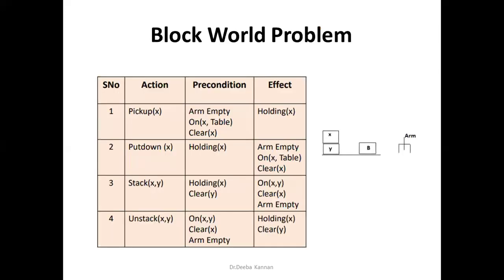We will sum up the block world problem with an example. In block world problem, we can look at the actions. You can put a stacking function with an un-stacking function. So you can use any block — instead you can put a block on the table. Pick up and put down are two actions. We can pick a block from the table and put it on the table. When stacking, we put y on the table; when unstacking, we have x on y and then put x on the table.